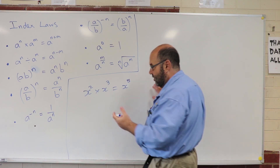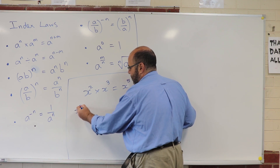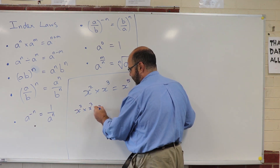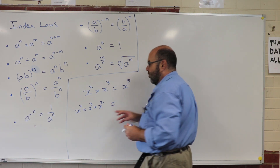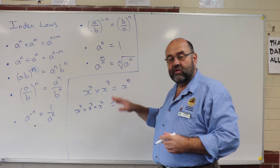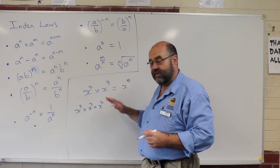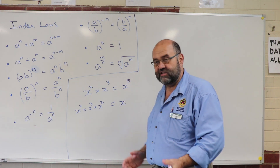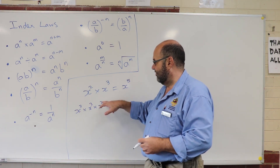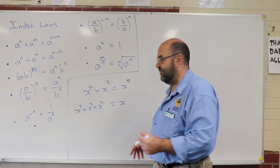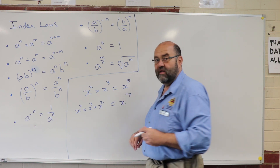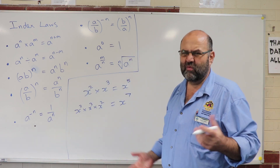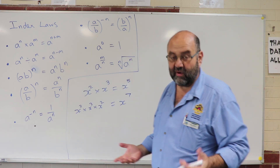It doesn't matter how many of these I've got. So if I've got x squared times x cubed times another x squared — well, they've all got the same base, so I just add the powers. It's going to be x to the power of 7, because 2 plus 3 is 5, plus 2 is 7. That's how that index law works. You would have seen that before — it's not new.